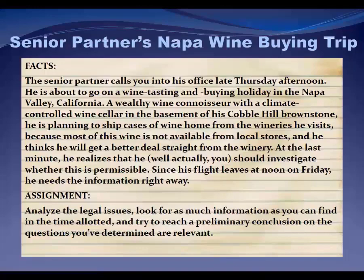Here's our first legal research problem. You're working at a big law firm in Manhattan, and late Thursday afternoon you get a call from your senior partner telling you that he's about to go on a wine tasting and buying holiday in Napa. He's a connoisseur, and by the end of his trip he wants to have filled up his expensive climate-controlled wine cellar. He decides he wants to buy wine in Napa and ship it home to his brownstone in Brooklyn. At the last minute — and it always does seem to occur to the partners at the last minute — it occurs to him that he wants to ship the wine home but he's not sure it's legal. Are private individuals even allowed to ship wine across state lines?